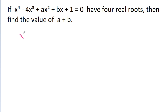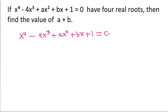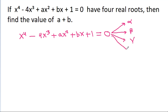The given equation is x⁴ - 4x³ + ax² + bx + 1 = 0. Suppose the roots of this equation are alpha, beta, gamma, and delta.